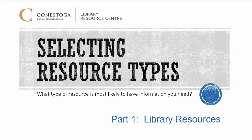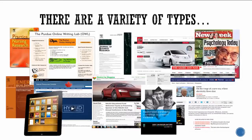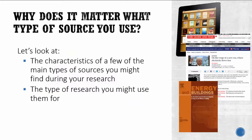Selecting resource types. What type of resource is most likely to have information you need? When you search the library as well as the internet, you'll find a variety of types of sources are available. Why does it matter what type of source you use? To answer this question, we'll take a look at the characteristics of a few of the main types of sources you might find during your research and the type of research you might use them for.